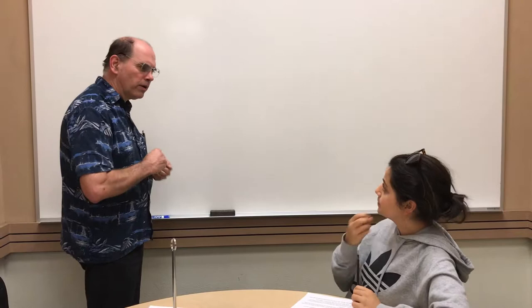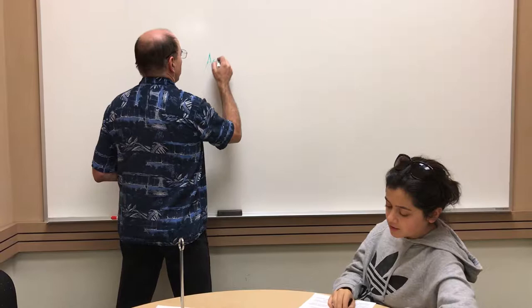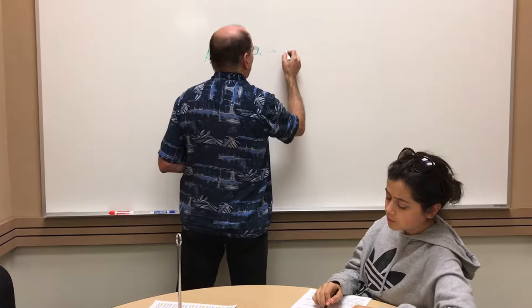Hi, Gary. So I need to write a net ionic equation. I'm having some problems. Okay. So what are we starting with? I think my equation is silver nitrate with copper chloride, and it gives me silver chloride with copper nitrate.